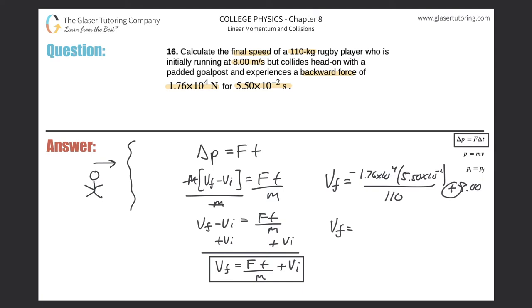Technically you're subtracting something from a negative number, but you know what I'm saying. Same sign, you basically add them, keep the sign. So, 1.76, and let me plug in the negative there. Negative 1.76 times 10 to the fourth times 5.5 times 10 to the minus 2, divided by 110, and then plus 8 meters per second.